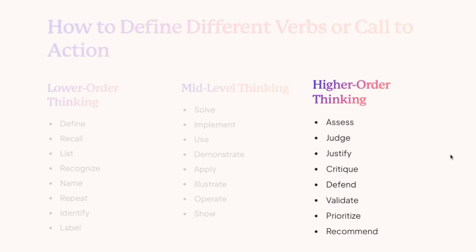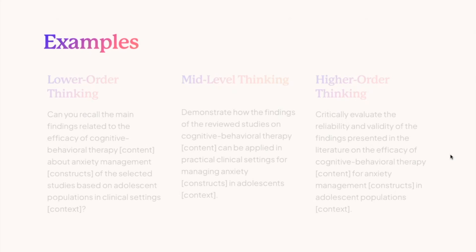Higher order thinking is a really important level where we ask AI to develop something new or make decisions. Verbs like critique, defend, and develop represent higher order thinking. For example, planning to develop a new framework, theory, or solution for a problem. This is purely analytical — we are not retrieving information but processing it and extracting solutions. I have defined verbs into three phases: lower order thinking, mid-level thinking, and higher order thinking.